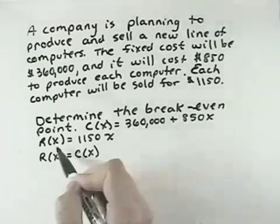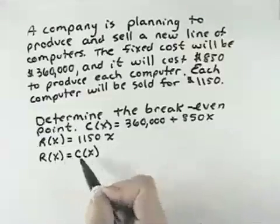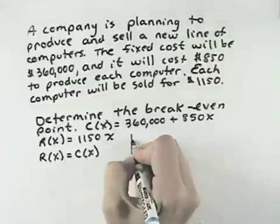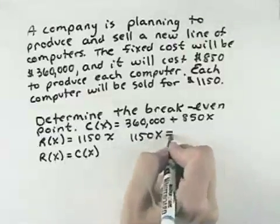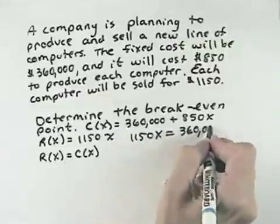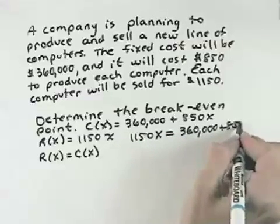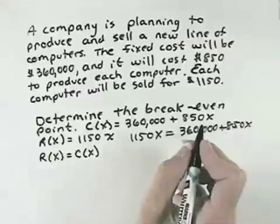We have our cost function and our revenue function. The break-even point is when those two are equal to each other. So we'll take our revenue function and set it equal to our cost function and solve. Let's subtract the 850x